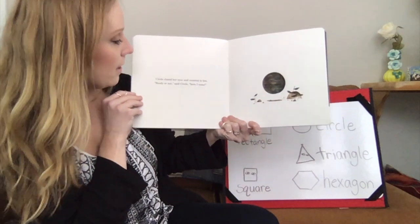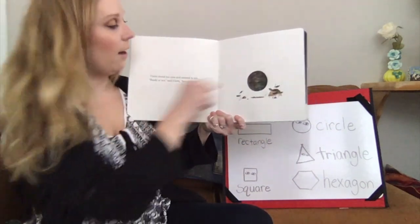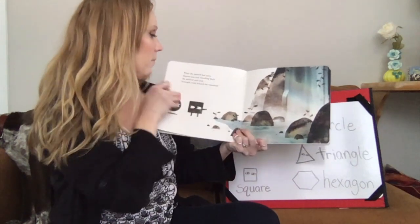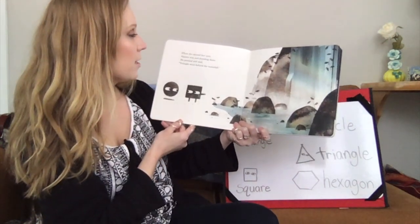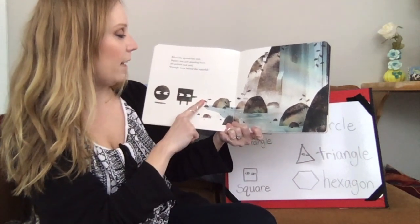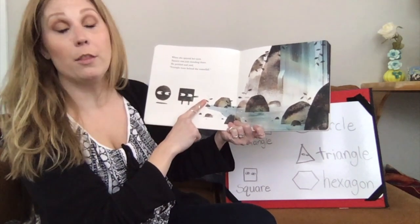Ready or not, said Circle. Here I come. When she opened her eyes, Square was just standing there. He pointed and said, Triangle went behind the waterfall.